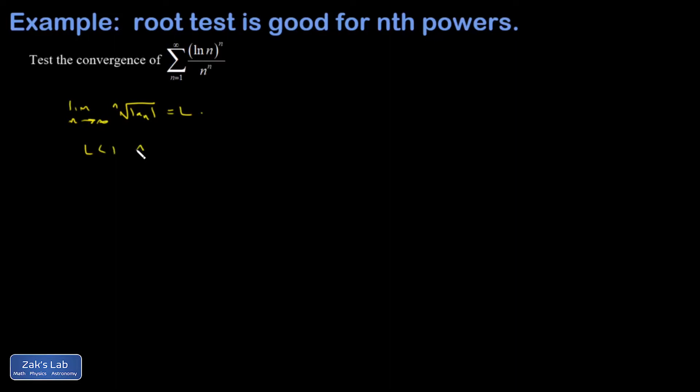If L is less than 1, then you have absolute convergence in your series. If L is bigger than 1, you have divergence. And if L is equal to 1, you have an inconclusive test.